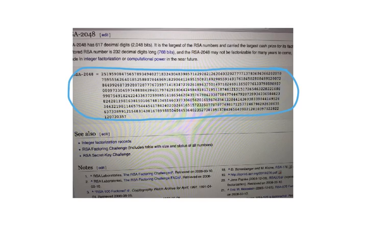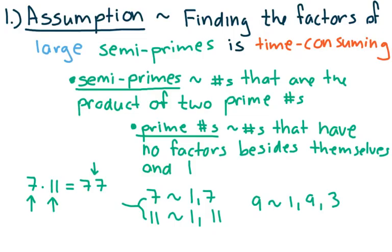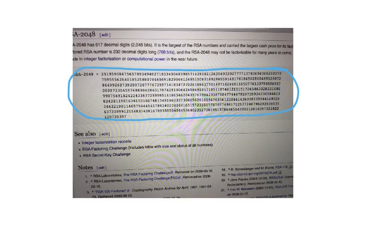This brings me to my third point, that finding the factors of large semi-primes is time-consuming. Exactly what do I mean by time-consuming? I mean thousands of years. This semi-prime that I showed you, RSA 2048, on a desktop computer, using a brute force method, would take literally a longer amount of time to factor than the universe has been in existence.